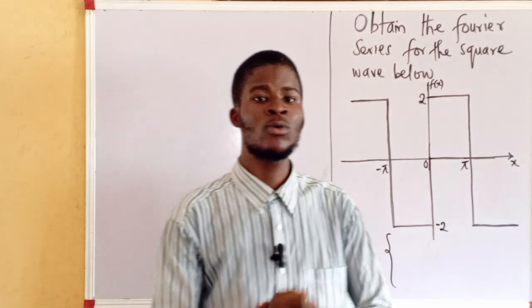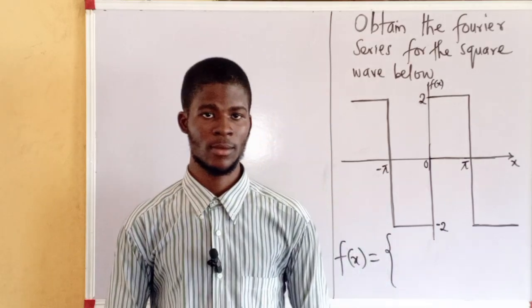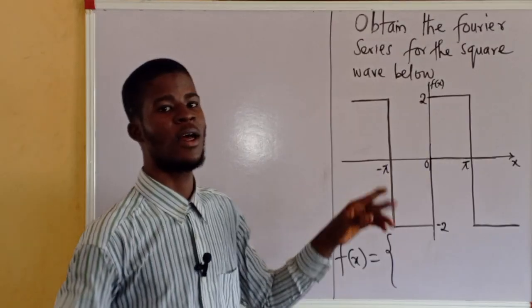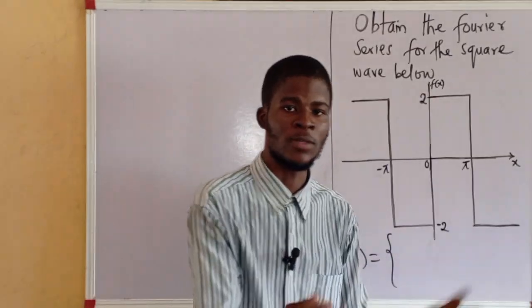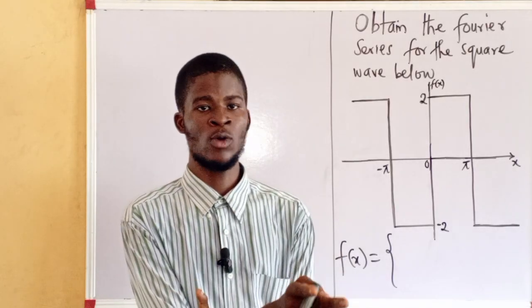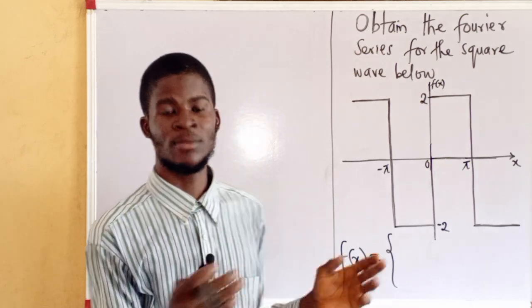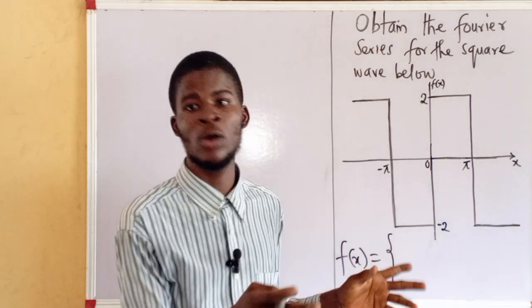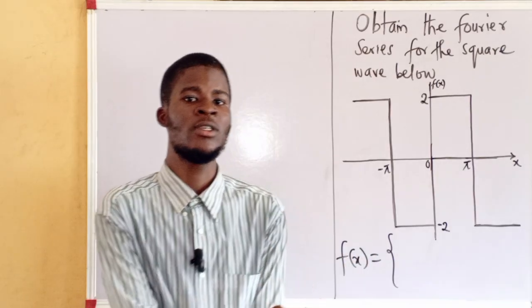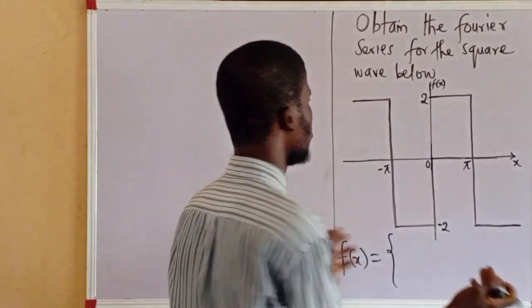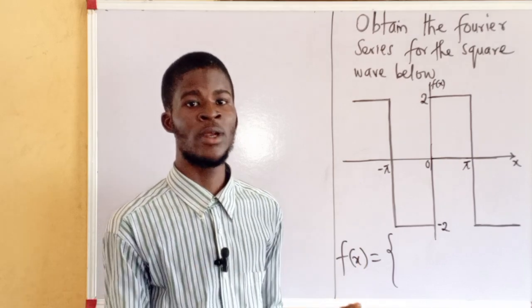Why is it odd? Remember what was said about odd functions in my previous video. Odd functions are symmetrical about the origin. So if I rotate this graph at an angle of 180 degrees, the picture I'm seeing now is the picture I will see when the graph is rotated at that angle. The function is an odd function because it is symmetrical about the origin — if it is turned at an angle of 180 degrees, the exact same picture appears.